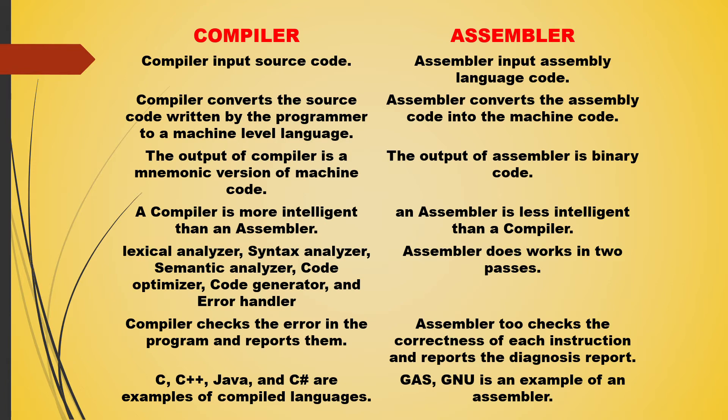The next point of difference is the output of the compiler is a mnemonic version of machine code, while the output of the assembler is binary code. A compiler is more intelligent than an assembler, while an assembler is less intelligent than a compiler.